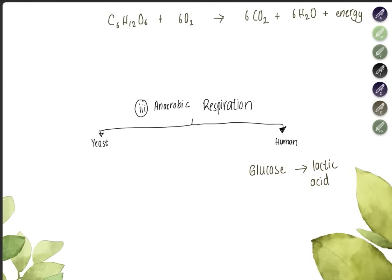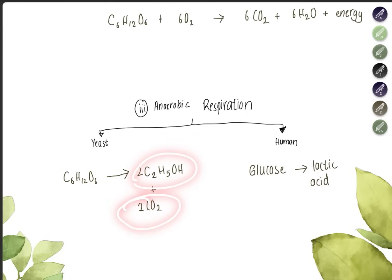Yeast also does anaerobic respiration on glucose to produce ethanol and carbon dioxide, which has uses such as making bread. The equation is: C₆H₁₂O₆ → C₂H₅OH + CO₂, so glucose gives us ethanol plus carbon dioxide.